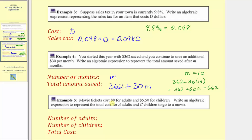For our last example: movie tickets cost eight dollars for adults and five dollars and fifty cents for children. Write an algebraic expression to represent the total cost for a adults and c children to go to the movies. The number of adults is represented by the variable a, and the number of children by the variable c. Every adult costs eight dollars and every child costs five dollars and fifty cents. The algebraic expression for the total cost, in dollars, would be eight times a, plus five point five times c.